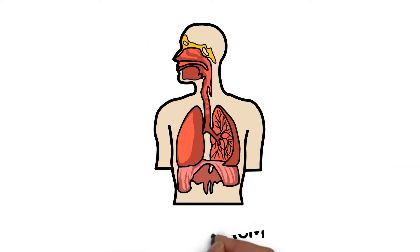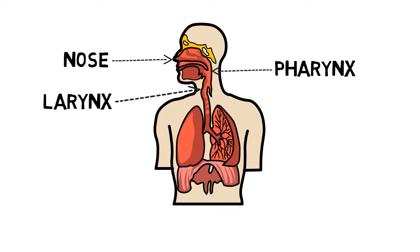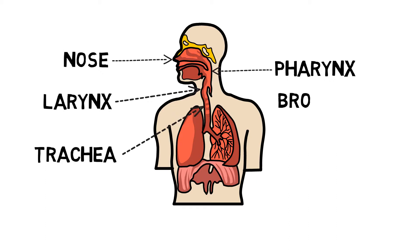Let's take a look at this process in action. Air enters the body through the nose, which filters, warms and moistens the incoming air. It passes down through the pharynx and the larynx. Air then enters the trachea, which cleans, warms and moistens the incoming air further, and splits into two bronchi, one for each lung.